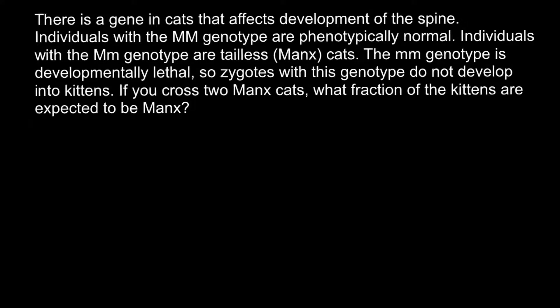Hello and welcome to Nikolai's genetics lessons. Today's problem: there is a gene in cats that affects the development of the spine. Individuals with the homozygous dominant genotype are phenotypically normal, individuals with the heterozygous genotype are Manx cats (tailless), and individuals whose genotype is homozygous recessive are developmentally lethal — zygotes with this genotype do not develop into kittens. If you cross two Manx cats, what fraction of the kittens are expected to also be Manx?